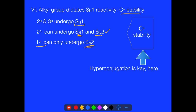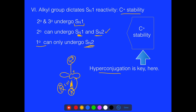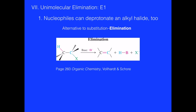This all connects back to stabilizing the carbocation, allowing it to be stabilized long enough for a nucleophile to come in and attack it. Hyperconjugation is key — having R groups nearby with additional electrons to donate their electron density through space helps stabilize that positive charge. The more groups you have, like in a tertiary group, the better, which is why secondary and tertiary can undergo SN1 reactions best.